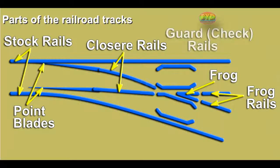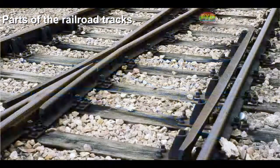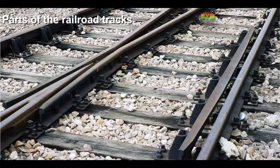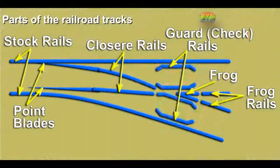A guard rail, also called a check rail, is a short piece of rail placed alongside the main stock rail opposite the frog. These exist to ensure that the wheels follow the appropriate flangeway through the frog and that the train does not derail.